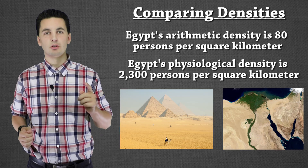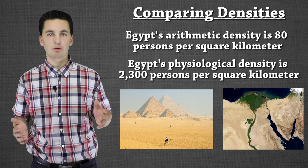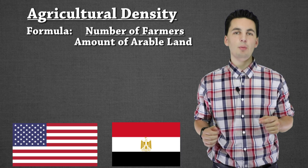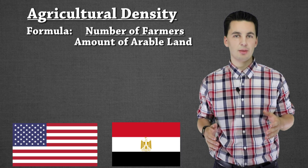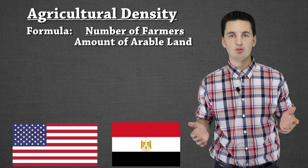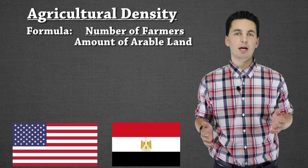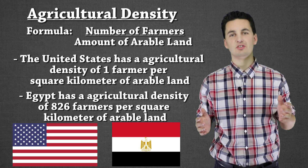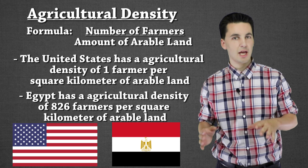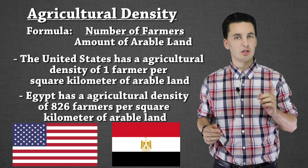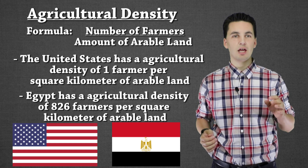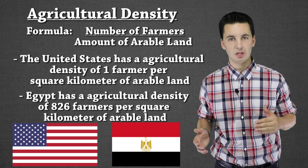Our last density is agricultural density, which shows an entirely different side of the story. To figure it out, we take the total number of farmers in society and divide it by the total amount of arable land. This shows how many farmers are working each kilometer of land. The United States has an agricultural density of right around one — about one farmer per kilometer of arable land. Egypt's agricultural density is around 826 farmers per one kilometer of arable land.